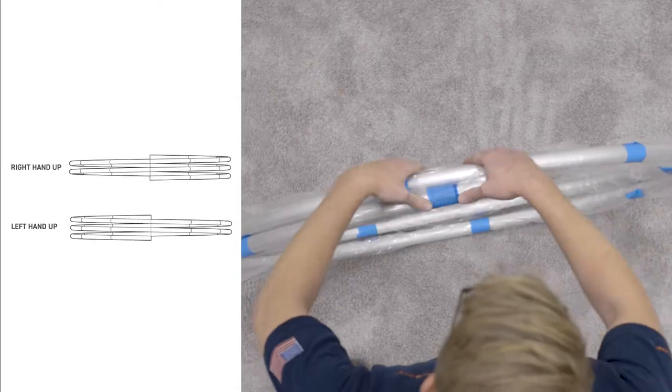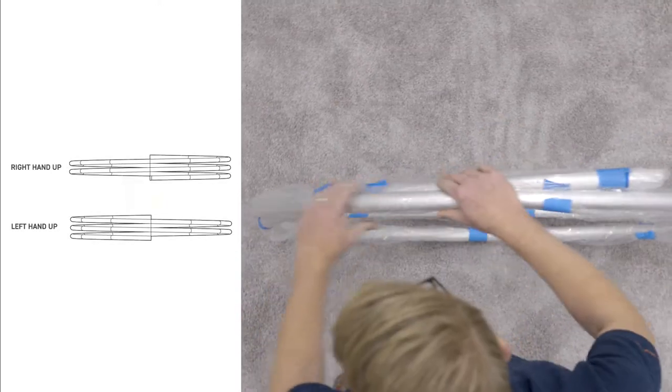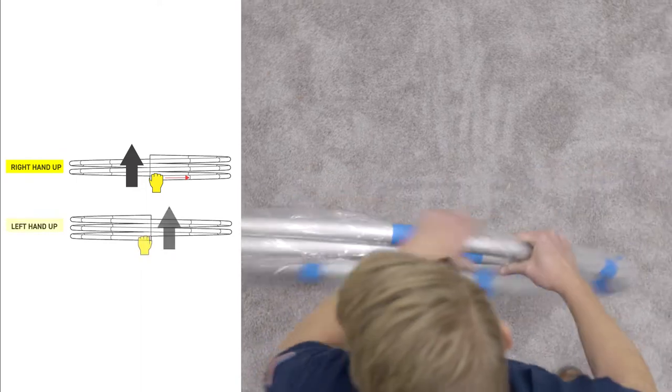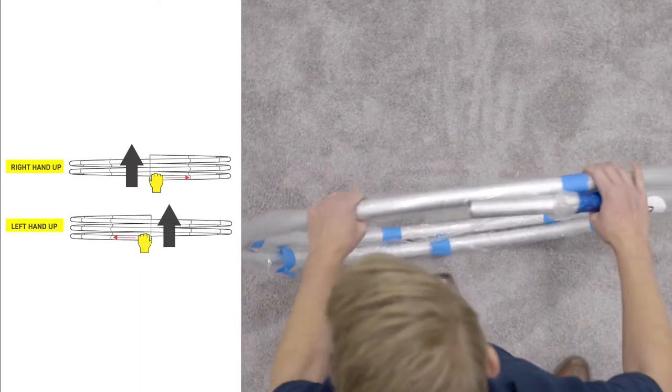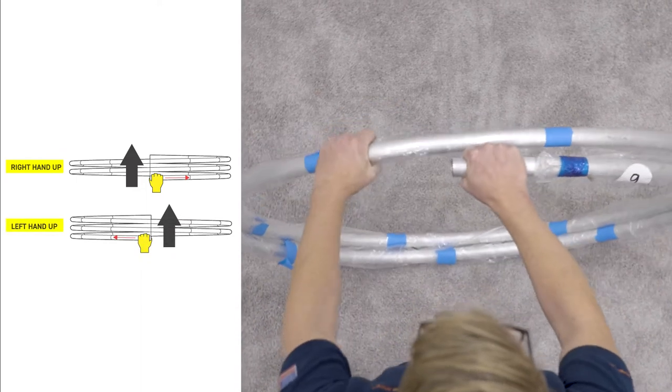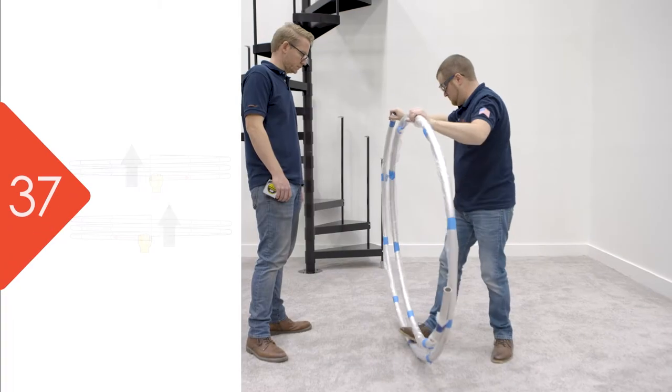Determine whether you are installing a right-hand-up or left-hand-up handrail, and position the handrail A1 appropriately using the diagram in your installation manual. Step 37.